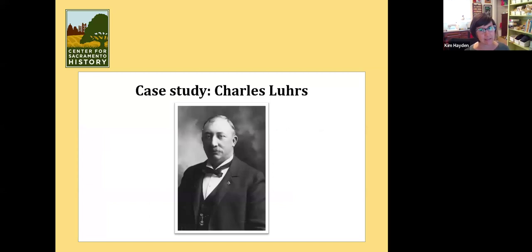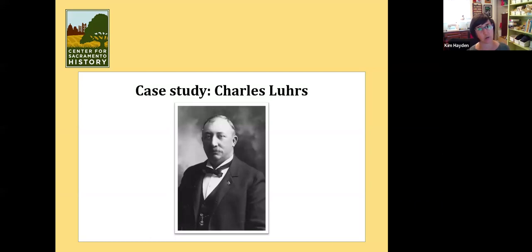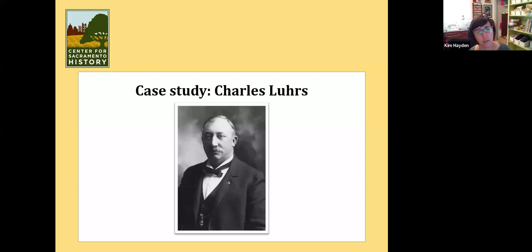I'm going to do a quick case study to show how you find information about one person using many different collections — looking at the types of records we have. The records I'm going to show are from probably a dozen different collections. Someone before I worked here went through and did this research on this guy and found all these records that tell a pretty complete story of his life. He's not the most relatable person — he's a wealthy white business owner — but it's hard to find a lot of records on one person for a good example. So we're stuck with Charles Lewis for now.